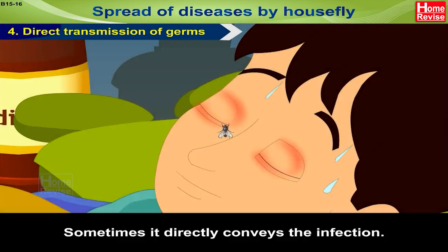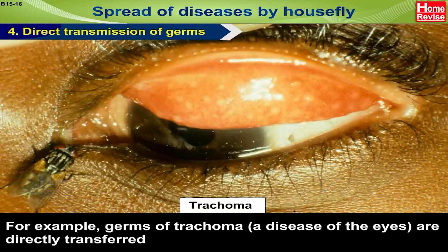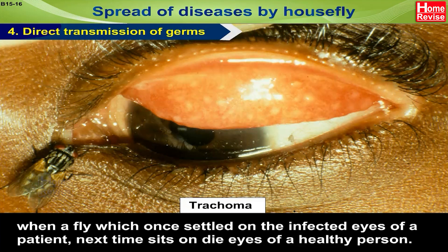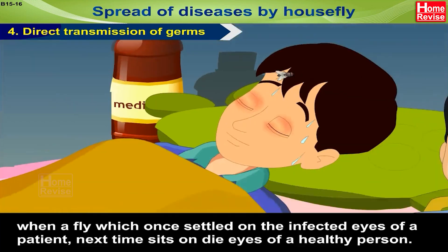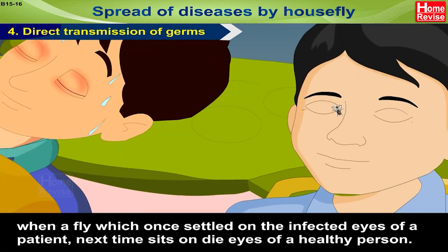Number four: direct transmission of germs. Sometimes the fly directly conveys the infection. For example, germs of trachoma, which is a disease of the eye, are directly transferred when a fly which once settled on the infected eye of a patient next time sits on the eyes of a healthy person.